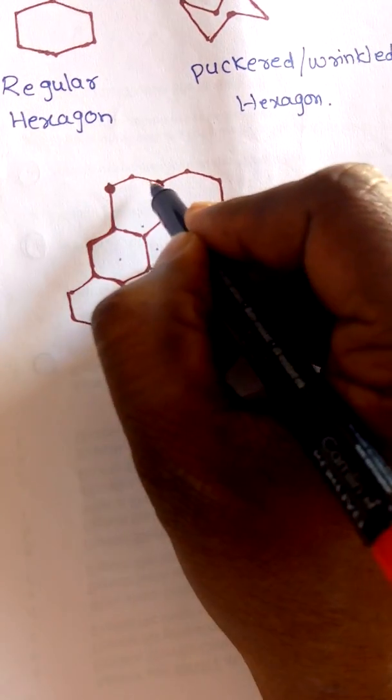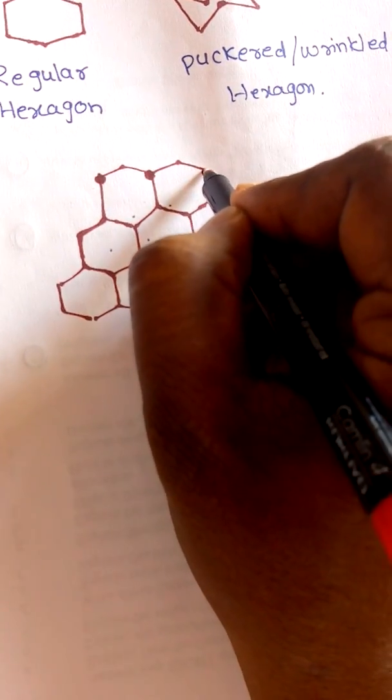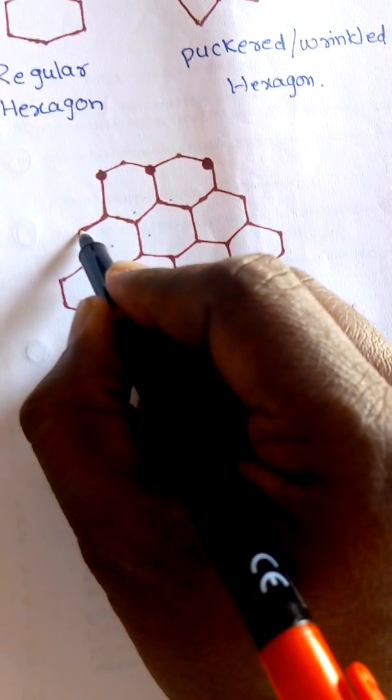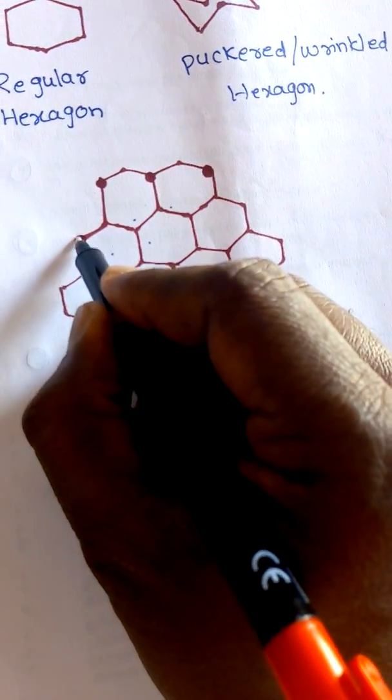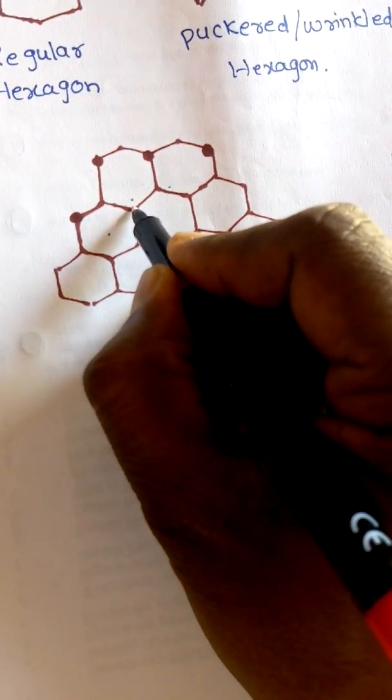So these two are alternate with one another and this is alternate to this carbon. So like that, we have to mark the alternate carbons like this.